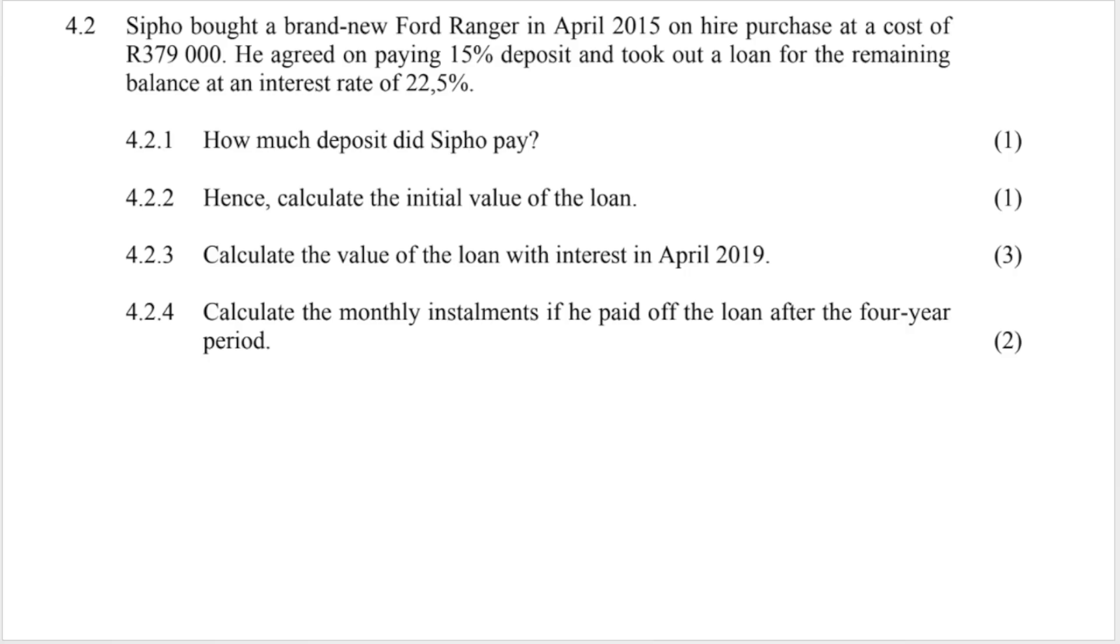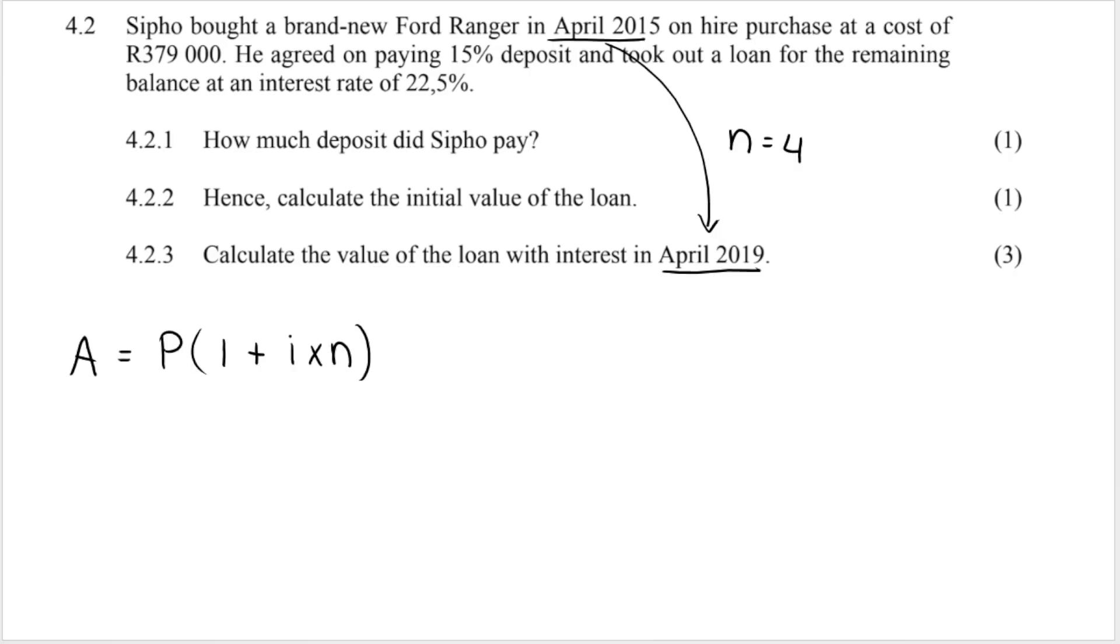My next question says calculate the value of the loan with interest in April 2019. So remember we are purchasing in April 2015. From April 2015 to April 2019 if you count that is four years. It's a four year period. This is when I need to use my simple interest formula. Now remember P is your starting amount and when we deal with hire purchase P is always the balance after I get rid of the deposit.